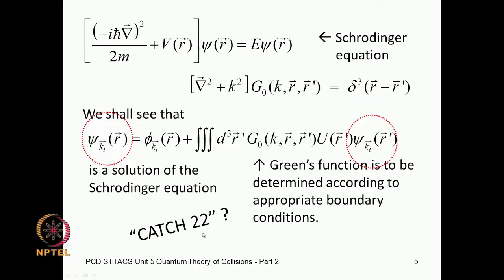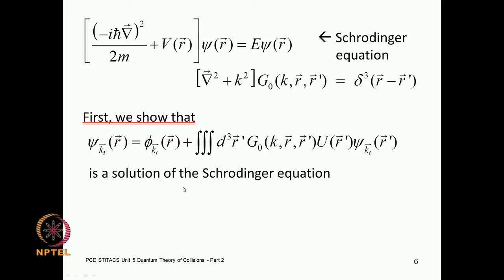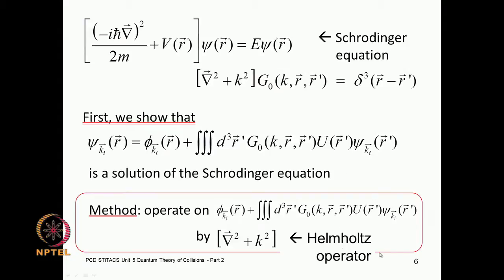We will figure out how this is to be solved, but the first thing to do is show that the formal structure of this equation appropriately describes the scattering process. So let us begin with the Schrödinger equation and show that this is indeed a solution, although not a very useful one because the integrand contains the wave function you want to find. Whether or not it is useful is a different story, but that it is formally correct is something we first test. That can be seen by operating on the right-hand side by the Helmholtz operator.